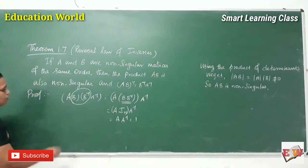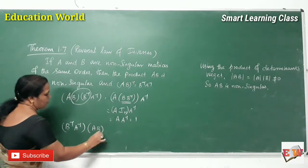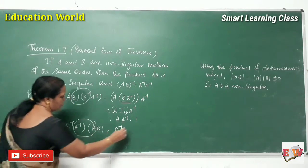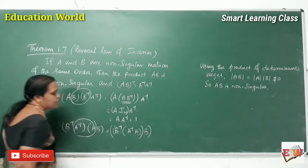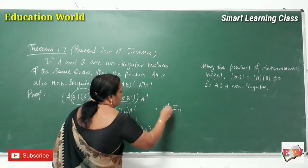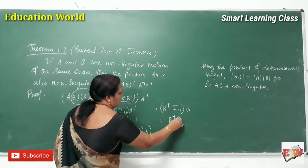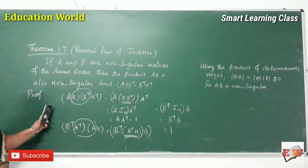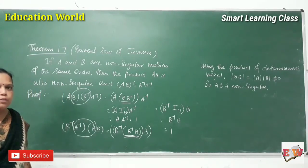Now applying the same condition: B⁻¹A⁻¹ times AB. By using matrix multiplication, this value is B⁻¹ times (A⁻¹ · A) times B, which equals B⁻¹ times the unit matrix times B, so B⁻¹ · B equals the unit matrix. These two results are the same, so (AB)⁻¹ equals B⁻¹A⁻¹. Hence proved. Thank you.